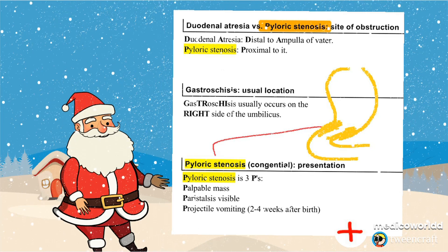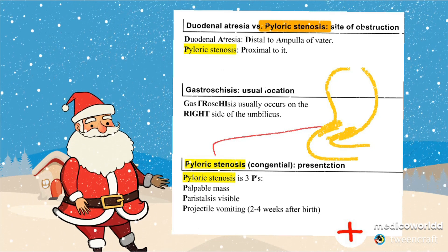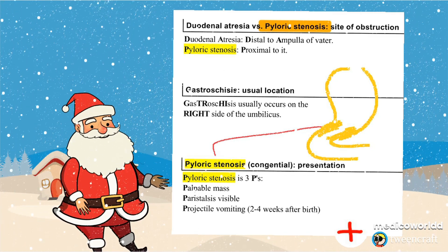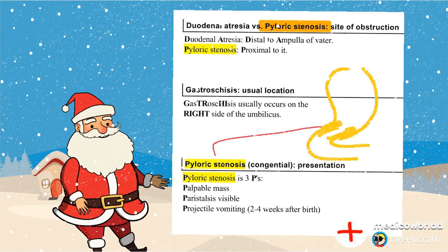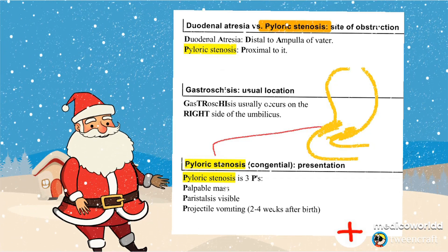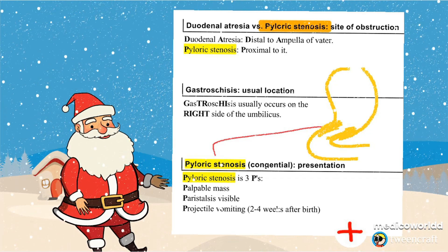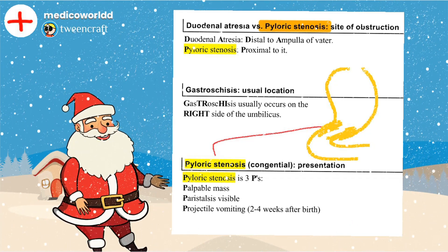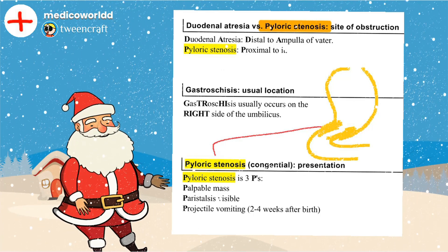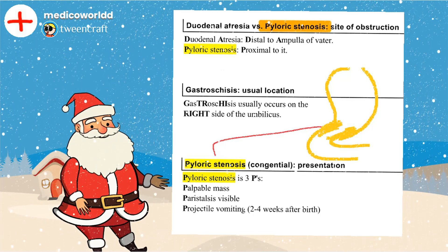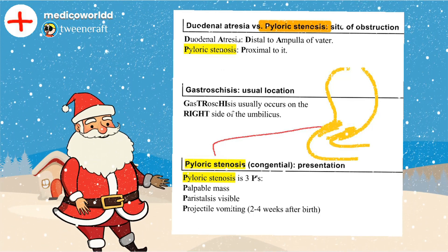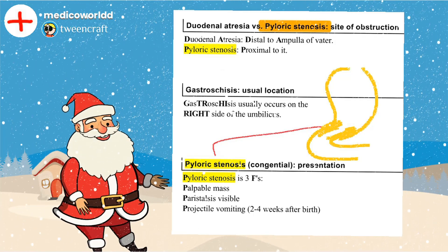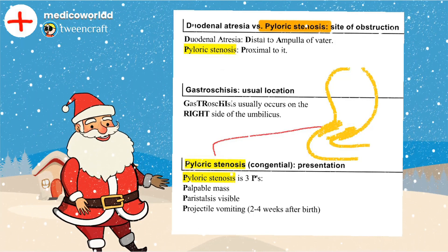The condition associated distal to the ampulla of Vater is duodenal atresia. The clinical features, meaning the congenital presentation of pyloric stenosis, you can remember as the three P's: palpable mass, visible peristalsis, and projectile vomiting. These present 2 to 4 weeks after birth.